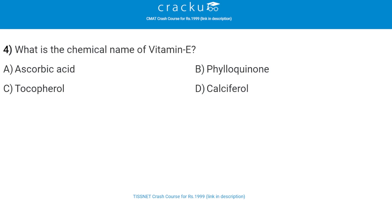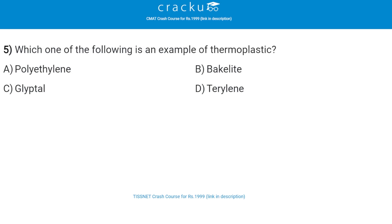Next: what is the chemical name of vitamin E? The correct answer is tocopherol, that is option C. Next: which of the following is an example of thermoplastic? The correct answer is polyethylene, that is option A.